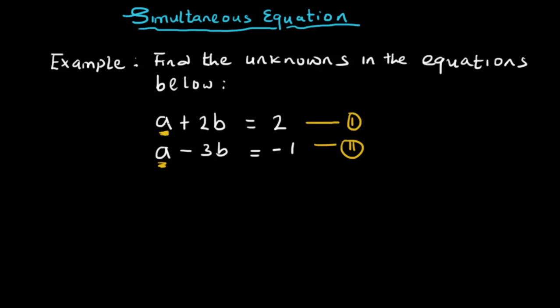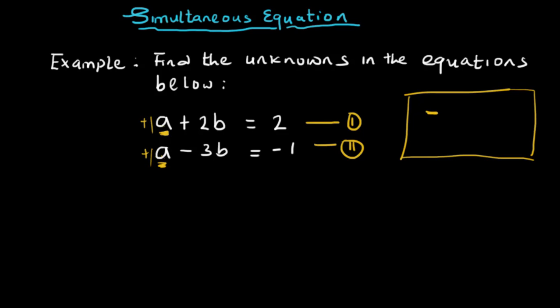Now, if you look at this, what is the coefficient of a? The coefficients are the same — both are 1. This is the simplest type of equation in the elimination method. Note that they are both of the same sign, plus 1 and plus 1. So if the variables are of the same sign and they have equal coefficients, all you need to do is subtract the equations — either equation 2 minus equation 1, or equation 1 minus equation 2.